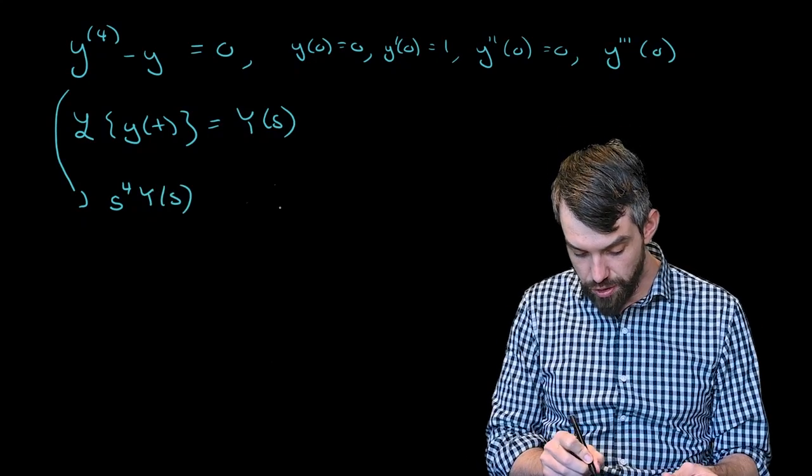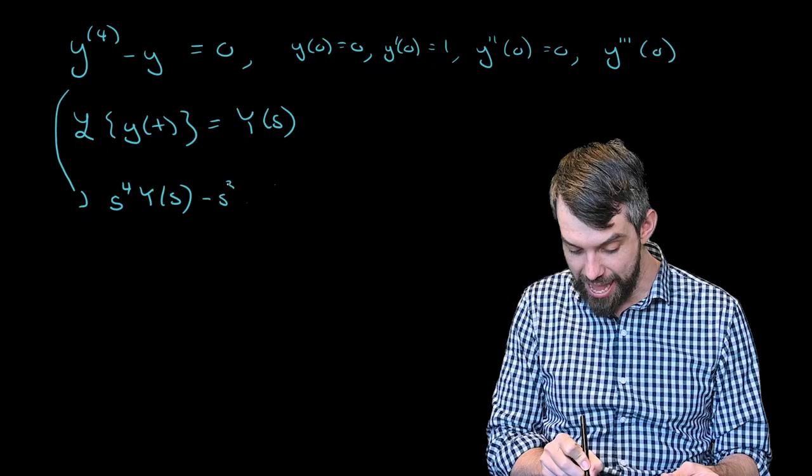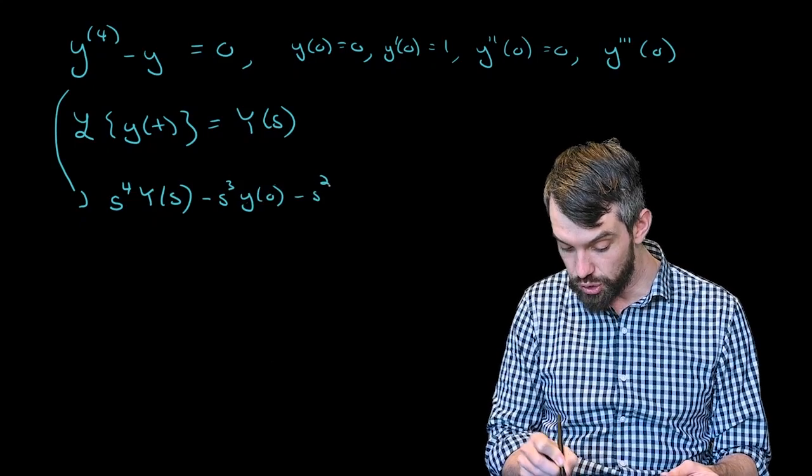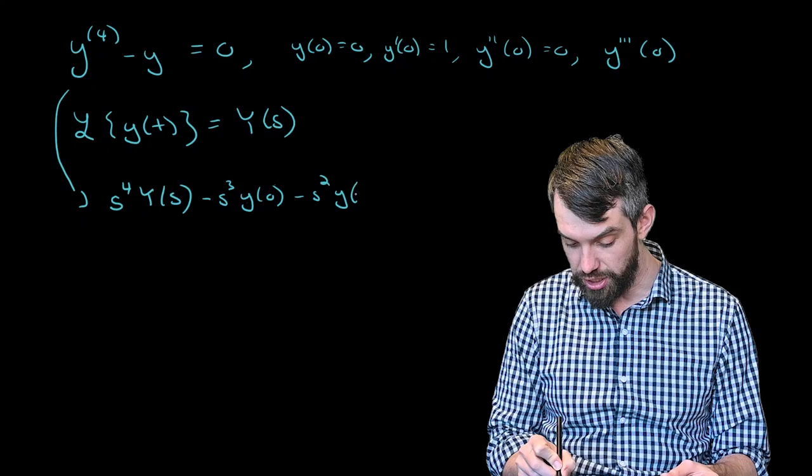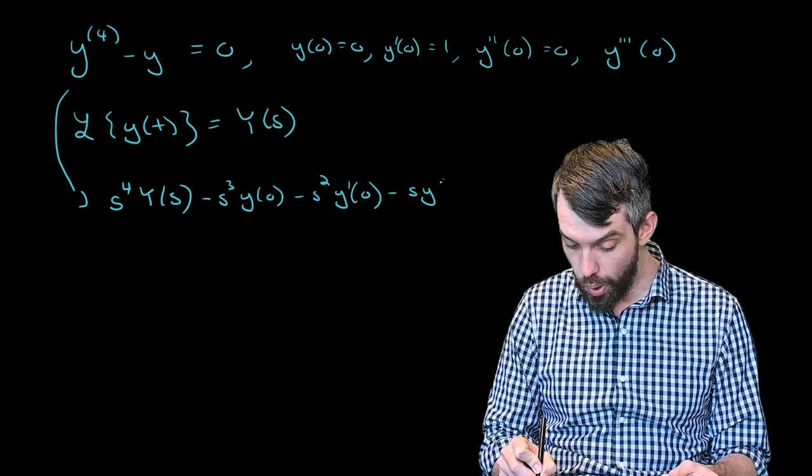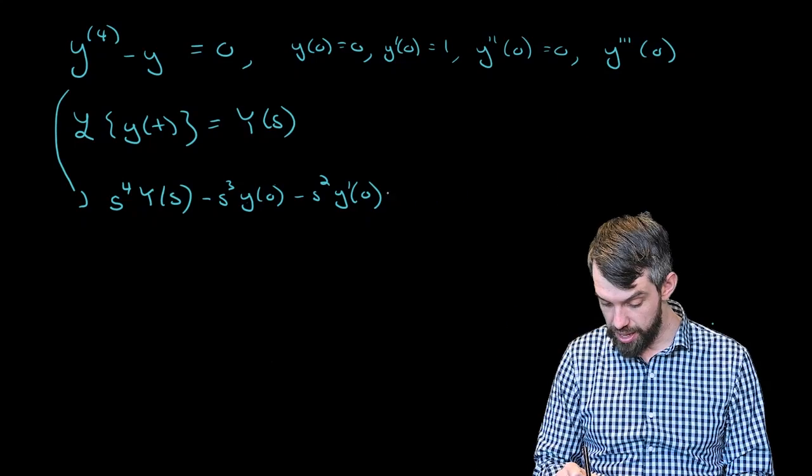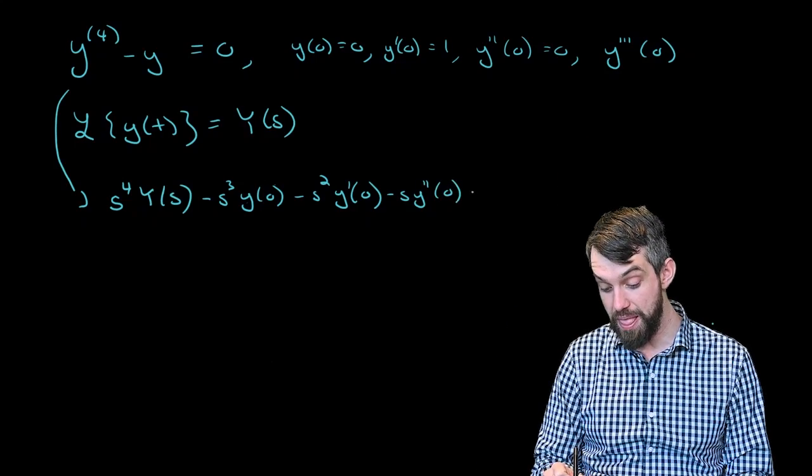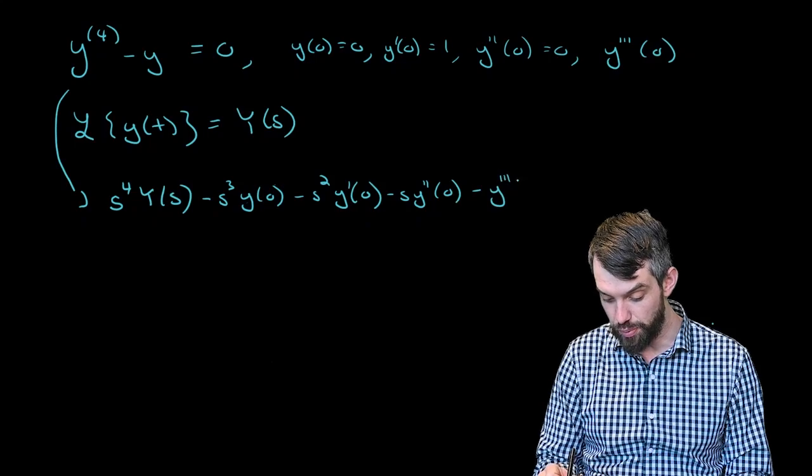Then I have a cubic term in s. I subtract off s cubed times y of zero. I subtract off s squared times y prime of zero. I subtract off s times y double prime of zero. And then finally, I subtract off y triple prime of zero.